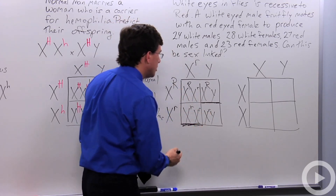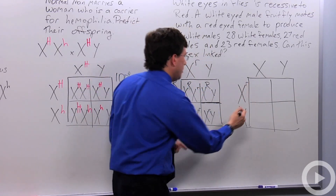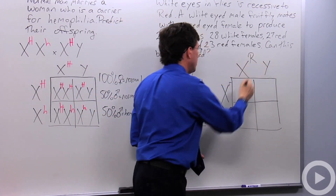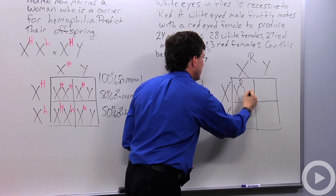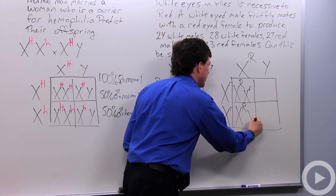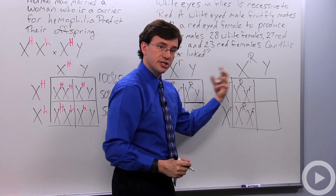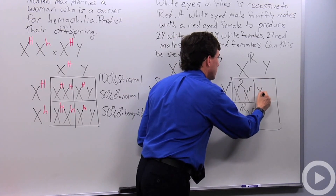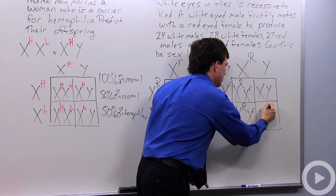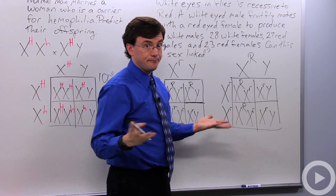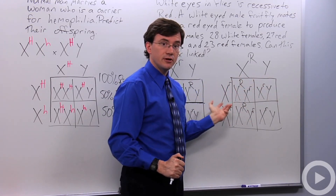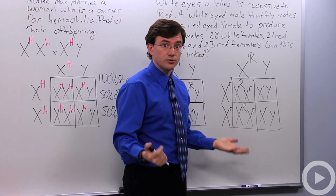Now let's take this daughter — X^R X^r — and mate her with this son — X^r Y — in the second generation. We get X^R X^r (red female), X^r X^r (white female), X^R Y (red male), and X^r Y (white male). A hundred percent of our females are red, while the males are split white and white. In this second generation, we finally see that unequal distribution of effects across genders that indicates sex-linked traits.